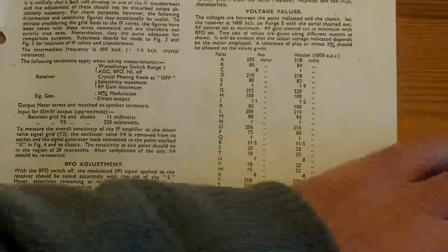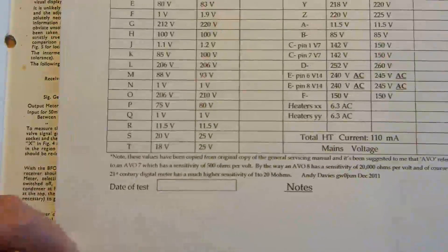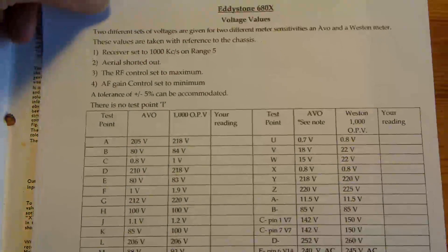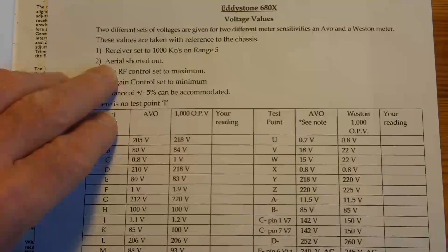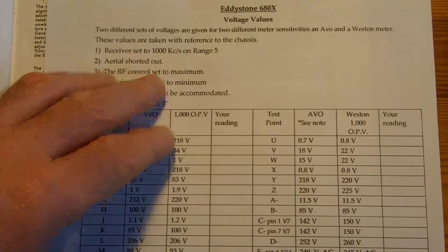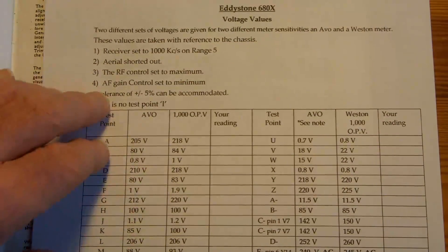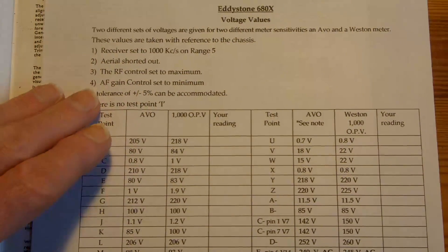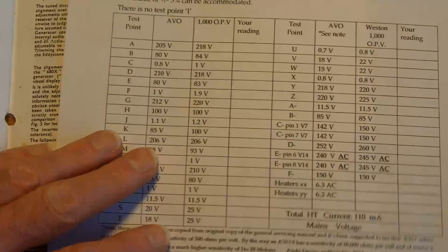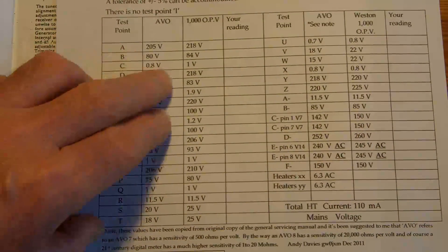I've taken those values and translated them onto a new A4 sheet. So there's a few things you need to do when checking the radio. Just make sure that it's set into the same conditions as the original test spec. So I've listed those items and then I've simply copied down those values that were in the manual.